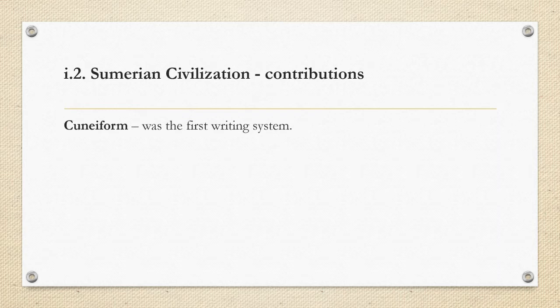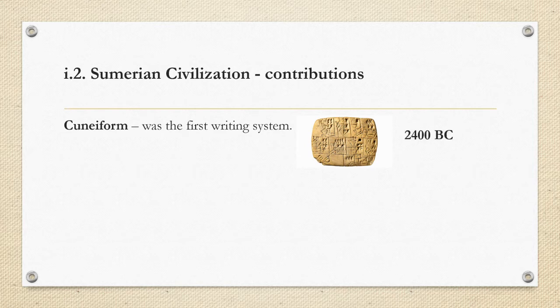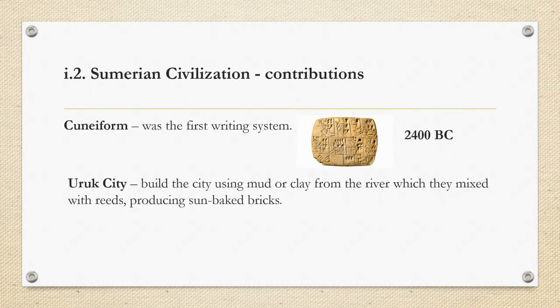What is most significant about the Sumerians is their cuneiform — this was the first writing system, developed around 2400 BC. They also built the Uruk city using mud or clay from the river, which they mixed with reeds, producing sun-baked bricks. Essentially, they made their buildings out of bricks.